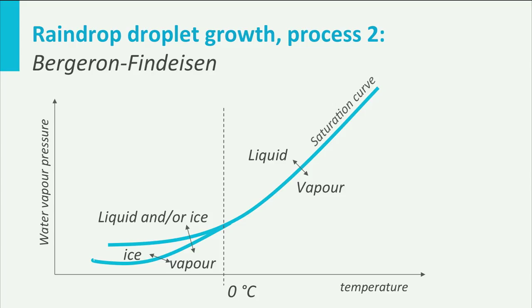The saturation curve of ice is lower than the one of liquid water. Now suppose we have a liquid water droplet in an atmosphere where the water vapor pressure is smaller than the saturation pressure of liquid water, but higher than the one of ice. The liquid will evaporate. Now let's add an ice particle in the same environment, close to the liquid droplet. The ice will not evaporate, because the air is saturated with respect to ice.